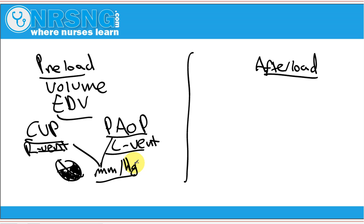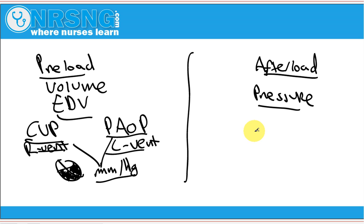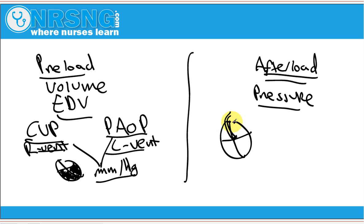Afterload — it helps to think of afterload as a pressure. Afterload is essentially the pressure that is required to open the valves at the beginning of systole. At the beginning of systole, we're trying to open our aortic and pulmonic valves to eject blood out of the heart, either to the body or to the lungs. Afterload is the pressure required to actually open those valves.